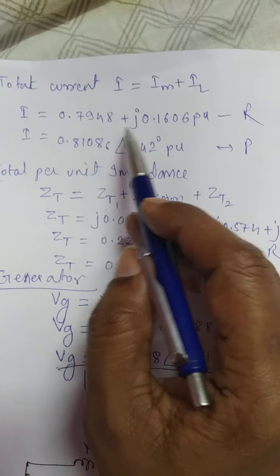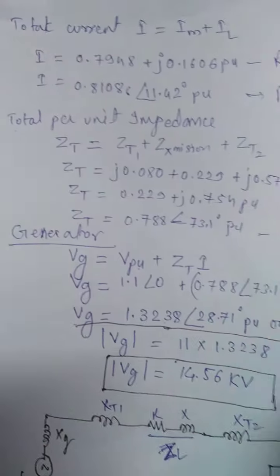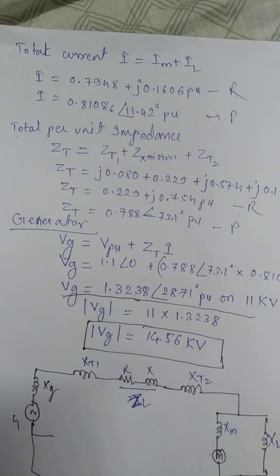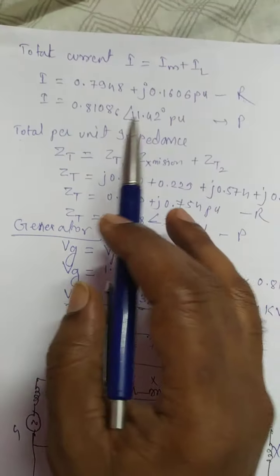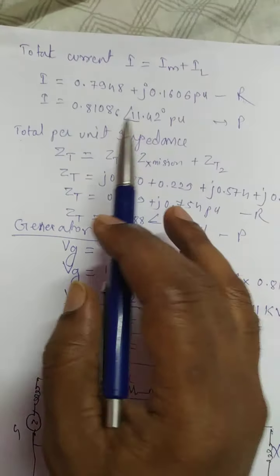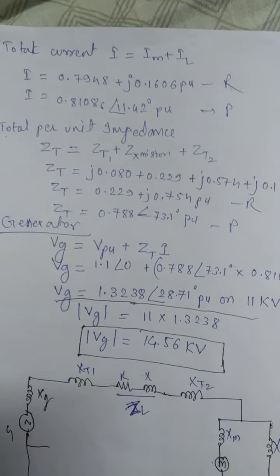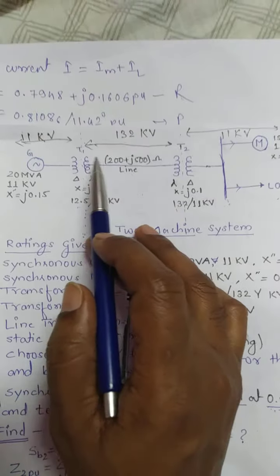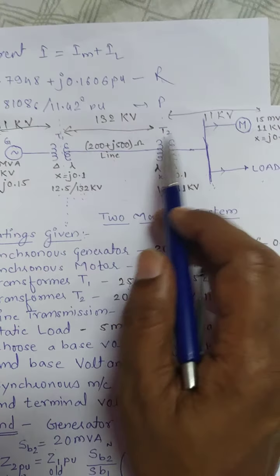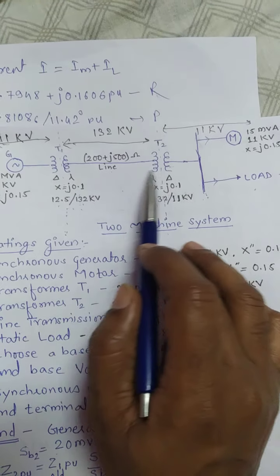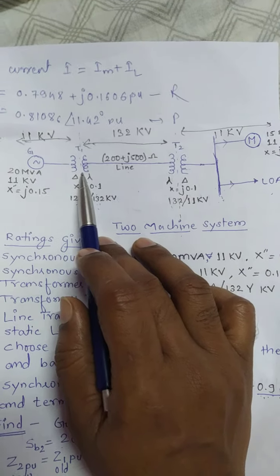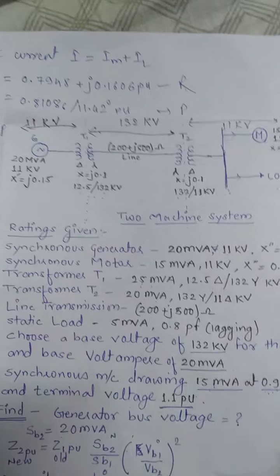With the help of your calculator you can convert the rectangular value into polar value. Now our aim is to find out the generator bus voltage, so for that we require ZT, the total impedance. In the single-line diagram there are three impedances: transformer 1, transformer 2, and the transmission line.